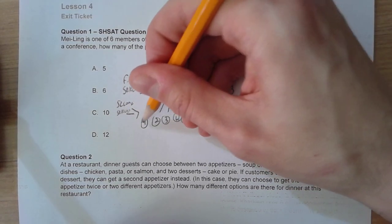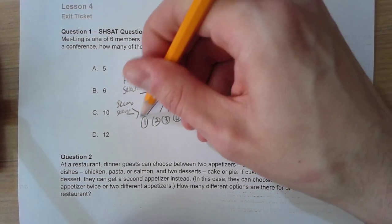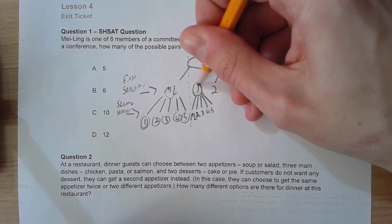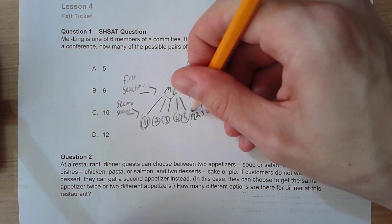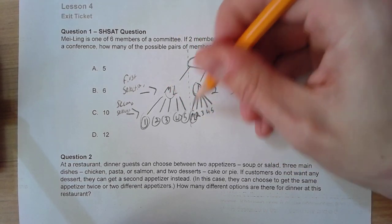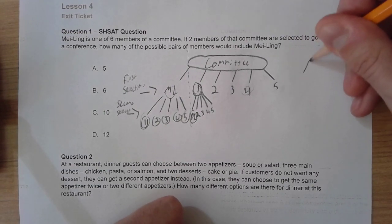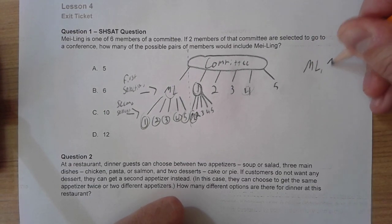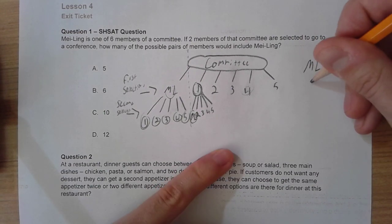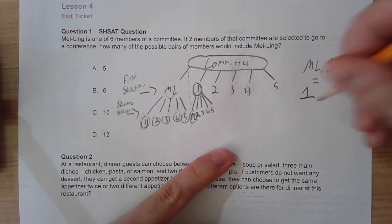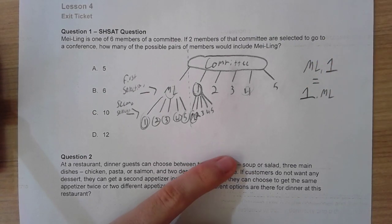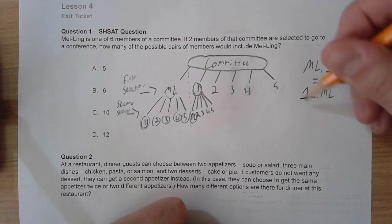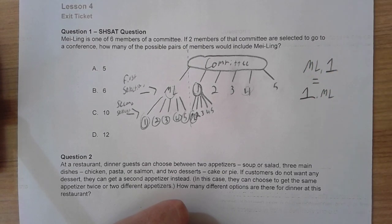Mei Ling with person number one already exists right here. So when we are going through our total number of favorable outcomes here, we are not counting this again. In this situation, M-L and person one is the same as person one and M-L. So we are only counting this as one outcome, if that makes sense.